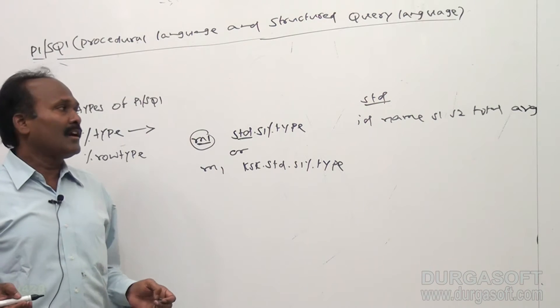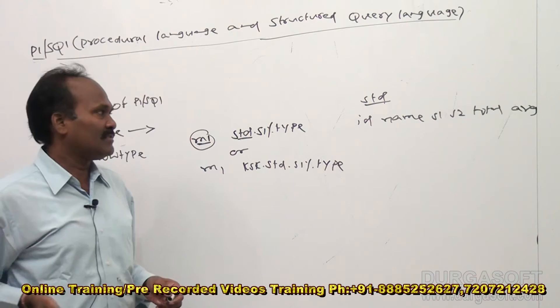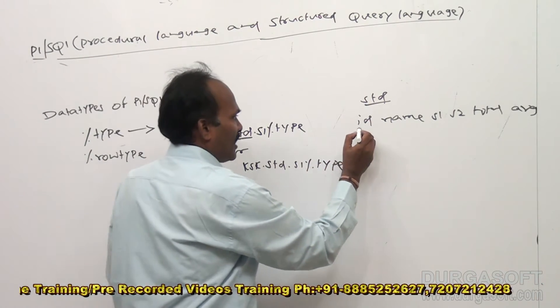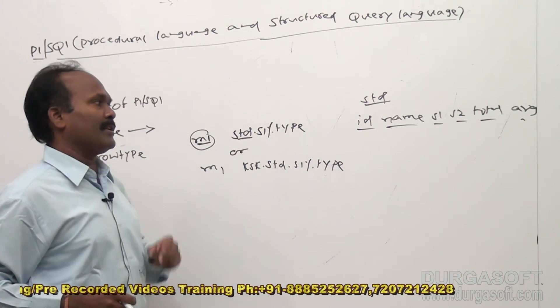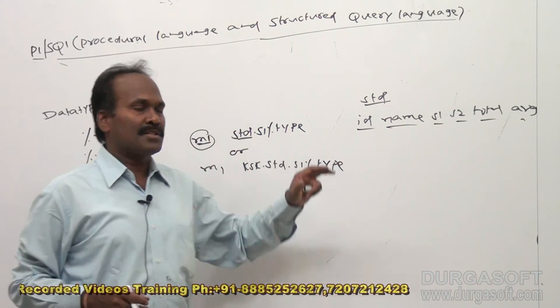Suppose here our std table contains id, name, s1, s2, total, and average. Now if I want to declare all columns like this - id, name, s1, s2, total, average - I have to take how many percentage type variables here? 1, 2, 3, 4, 5, 6.